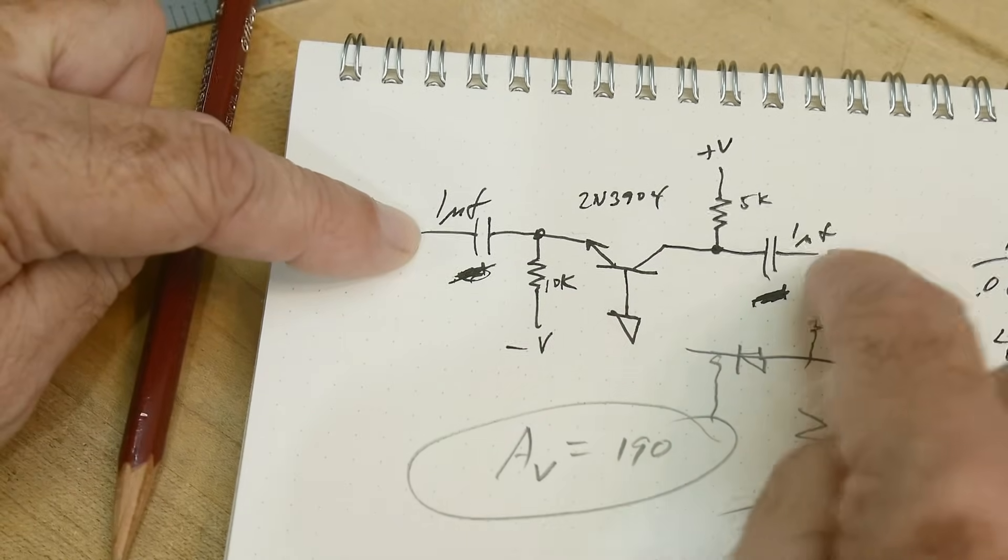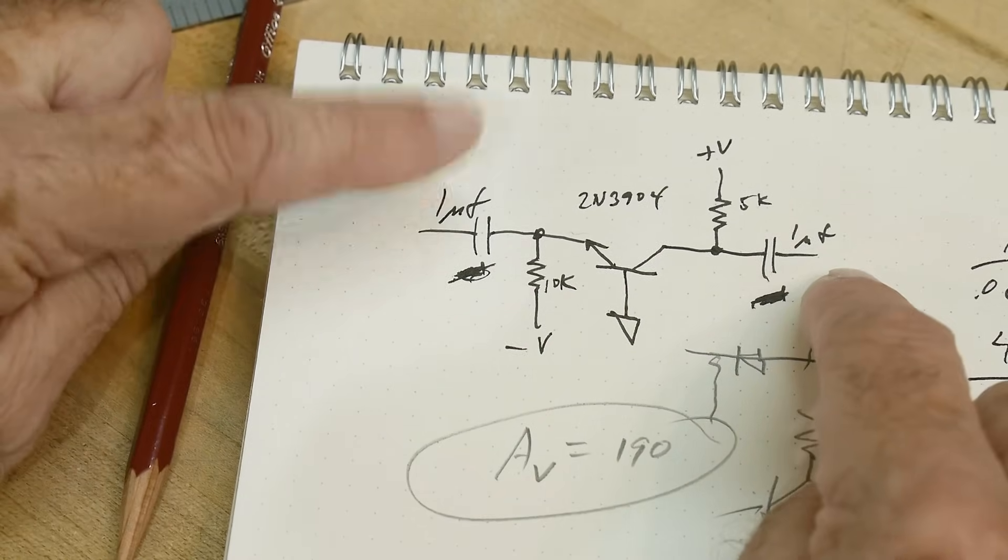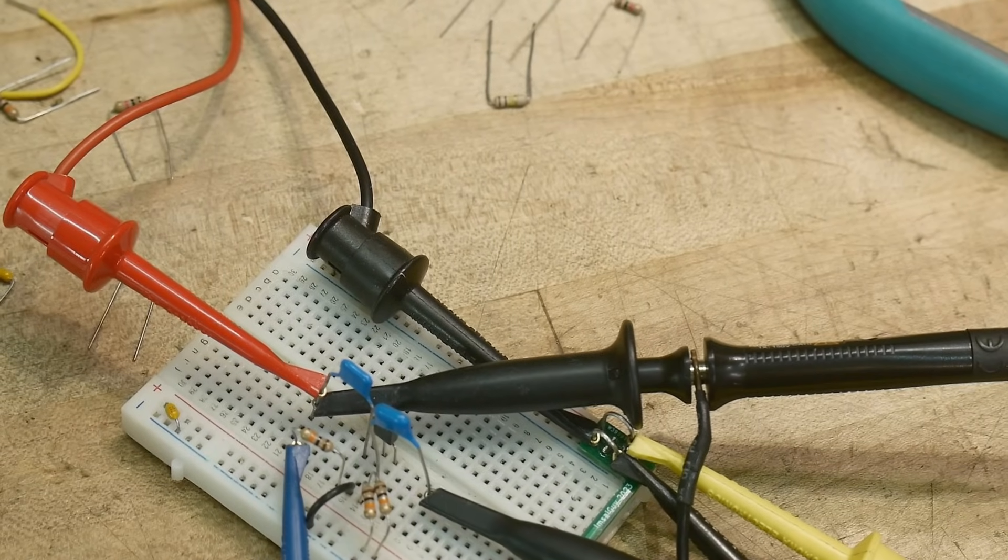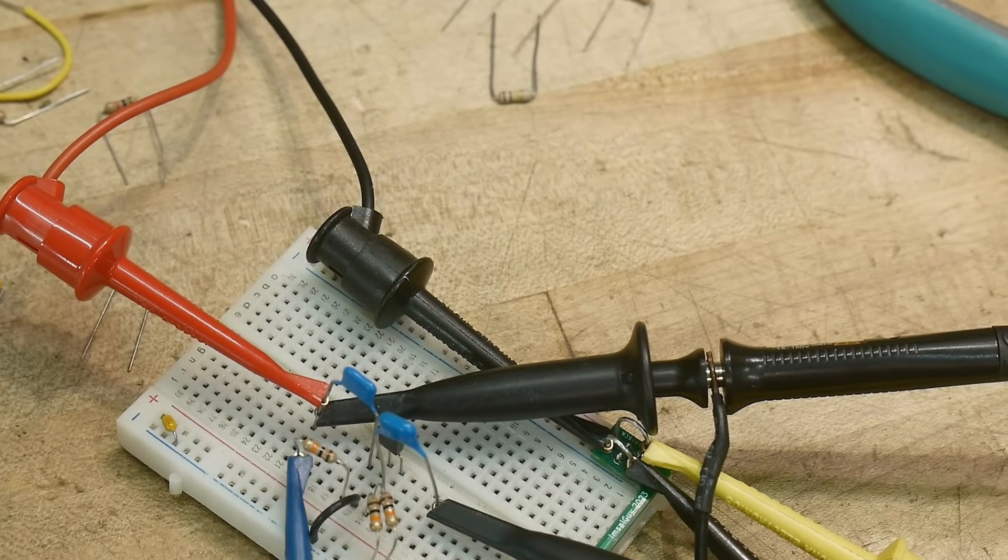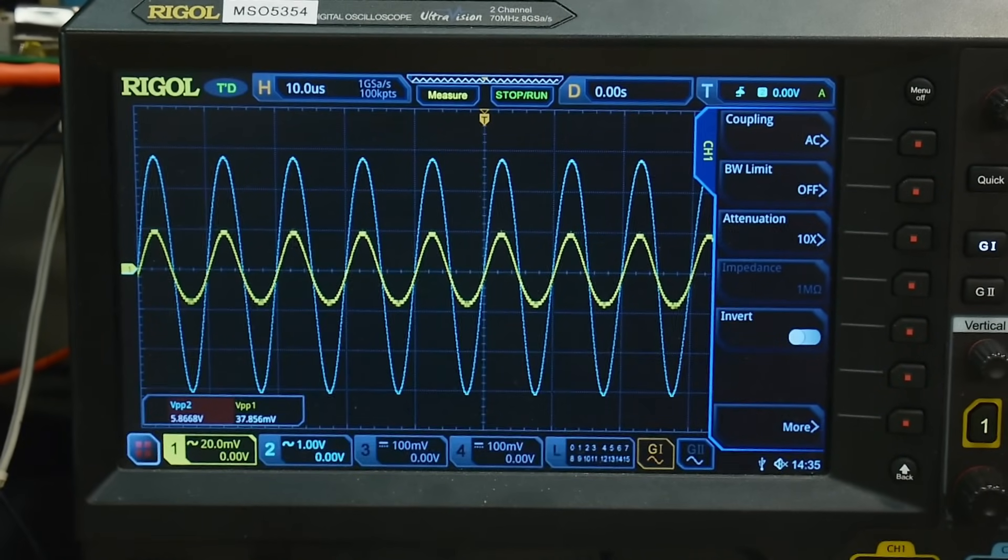We're going to put a signal in here. It has to be capacitively coupled. I'm using a 3904 transistor right over here. We got the little and then we got the big.